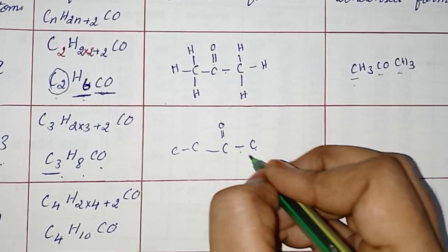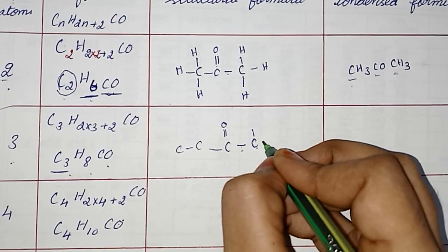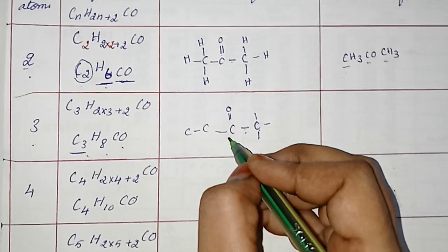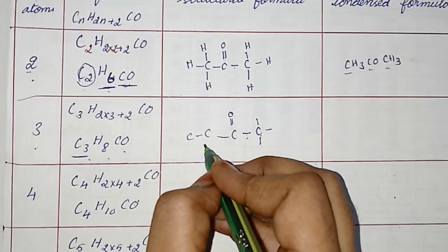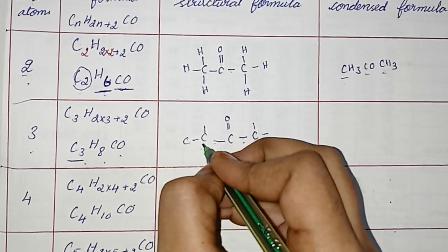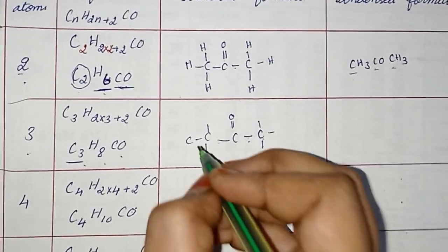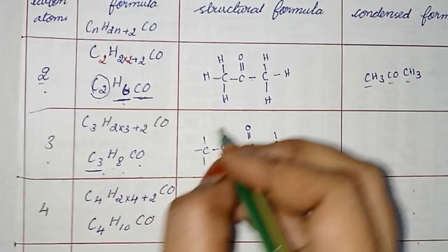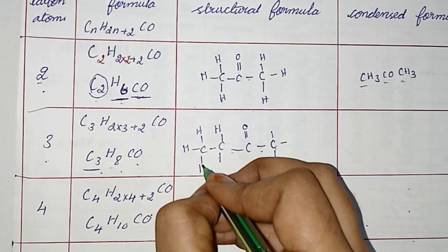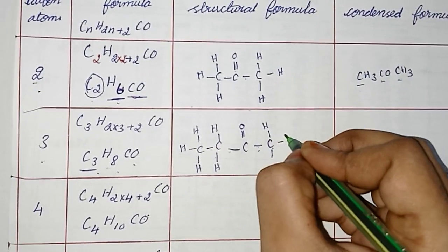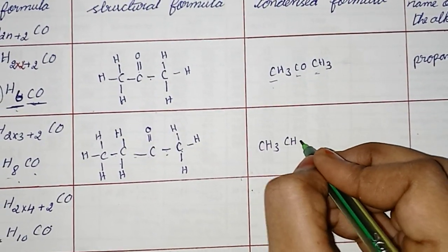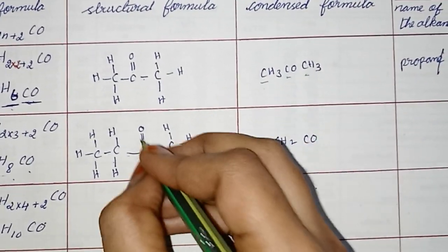Now the framework: this carbon contains only 1 bond, so it needs 3 more. The next carbon is surrounded by 4 bonds — tetravalency completed. The next one is surrounded by 2 bonds, needing 2 more. The last one needs 3 more bonds. Framework completed. How many hydrogens? 8: 1, 2, 3, 4, 5, 6, 7, 8. Converted to condensed form: CH3-CH2-CO-CH3.